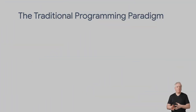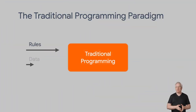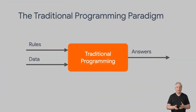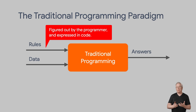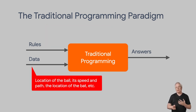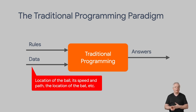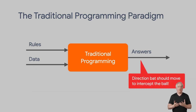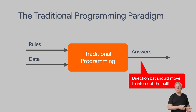It doesn't really know how to play the game. I like to represent that with boxes like this. There are rules and data in, where the rules are figured out by the programmer and expressed in code. And data is things like the location of the ball, its path, and the location of the bats. And out of this come answers — in this case, the answer is to move the bat in a particular direction.